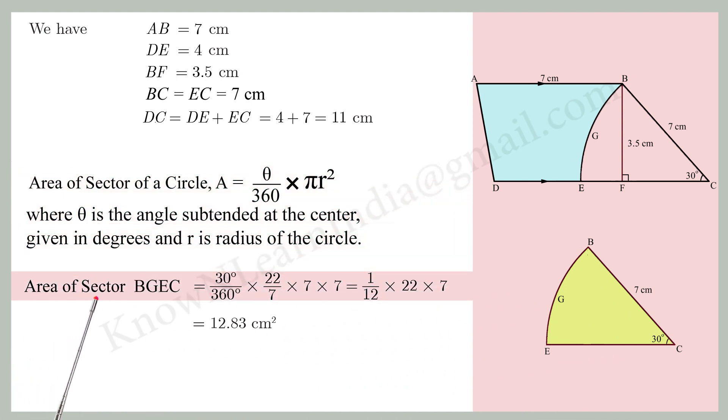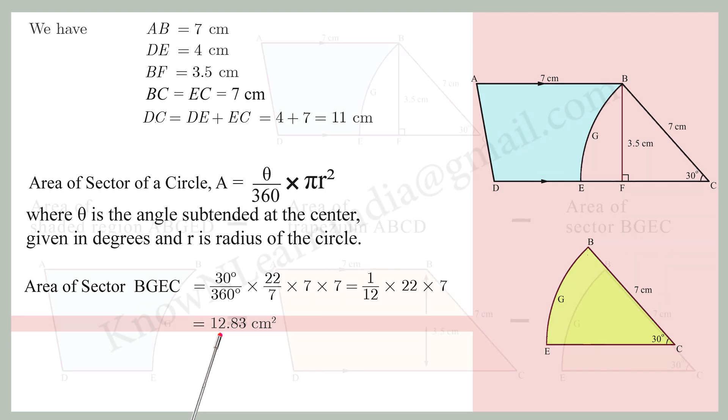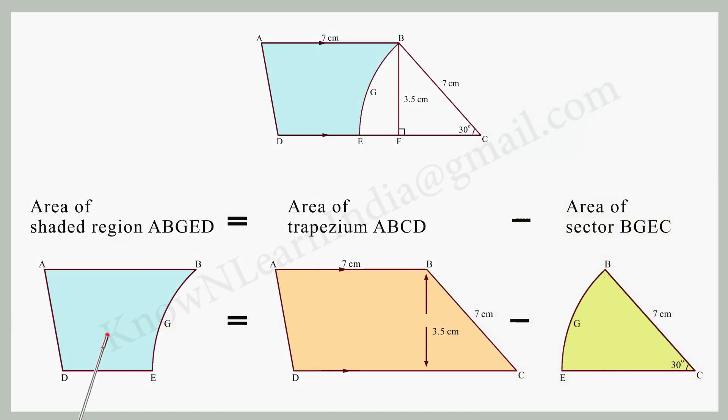Area of sector BGEC equals 30 by 360 times 22 by 7 times 7 times 7, which equals 1 by 12 times 22 times 7, which equals 12.83 cm squared.